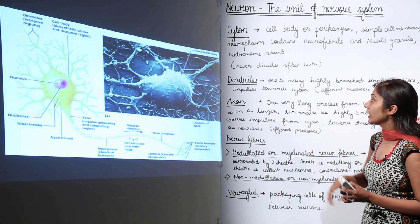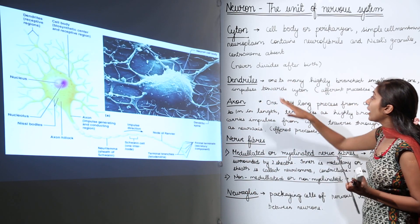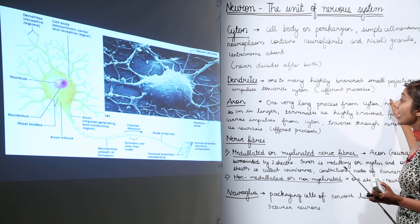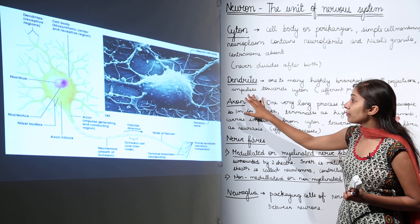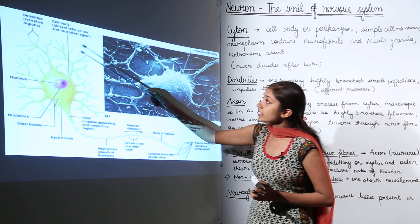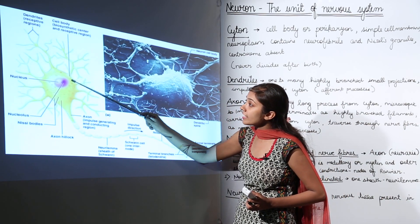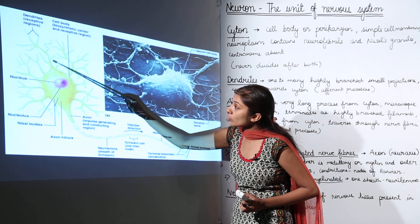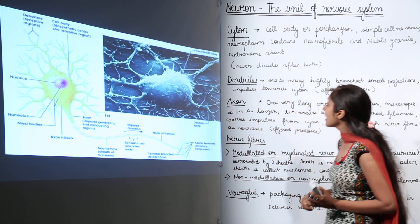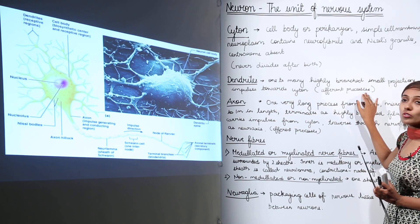The dendrites are one to many highly branched small projections that send impulses towards the cytone. Impulses travel to the cytone via the dendrites, which is why dendrites are called afferent processes.